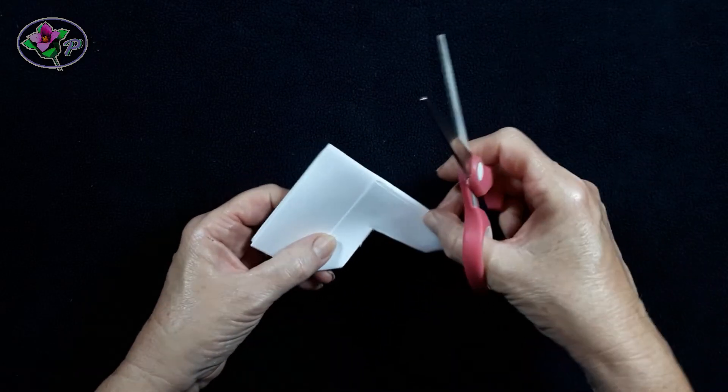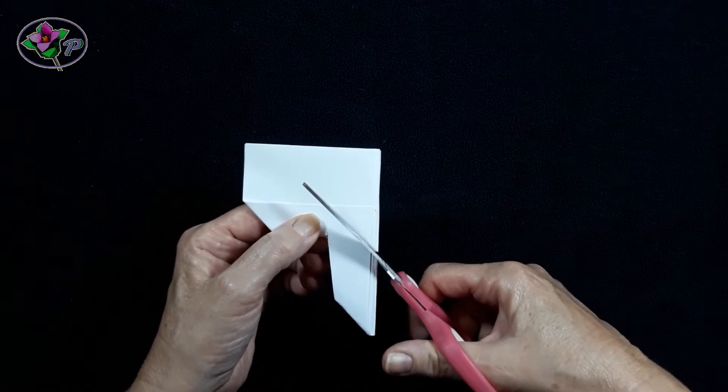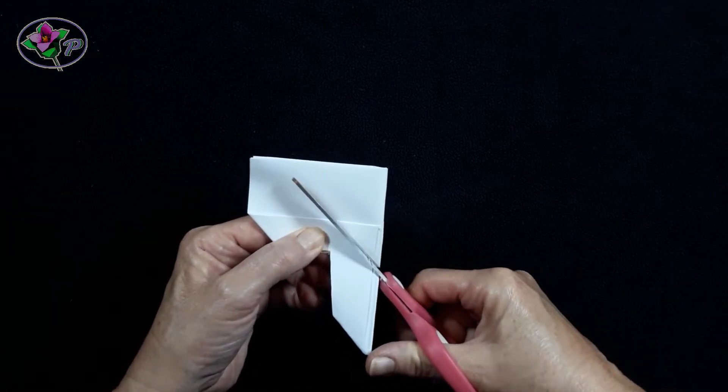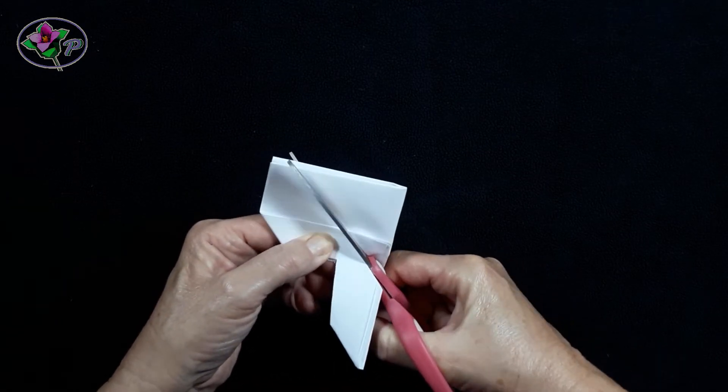Step 7. Cut out another triangle like I'm doing now but be sure you stop the first cut where the paper is folded to.